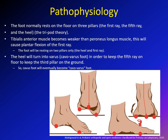Let's discuss the pathology of how cavus foot starts and progresses. Normally, the foot rests on three pillars — the tripod theory: the heel, the head of the first metatarsal, and the head of the fifth metatarsal. In cavus foot, the tibialis anterior muscle is weaker than the peroneus longus, so the first ray starts to plantar flex because the peroneus longus is a plantar flexor of the first ray while the tibialis anterior is a dorsiflexor.